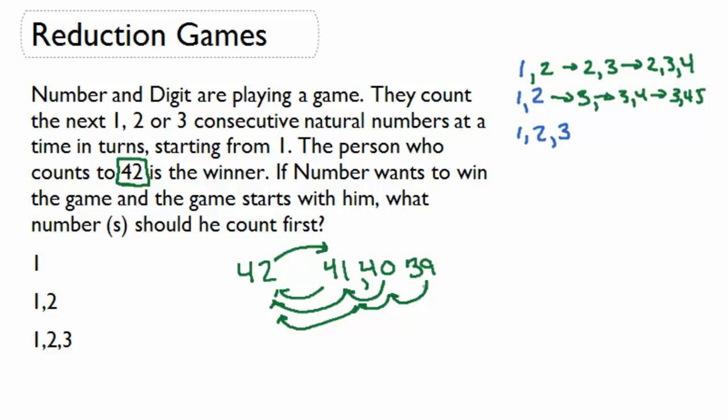So, this player needs to say 38 in order to win. If you get the number 38, then you can win because no matter what the other player says, whether it's 39 or 39, 40 or 39, 40, 41, you can always use your 1, 2, or 3 numbers to make up to 42.